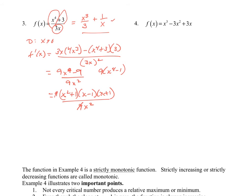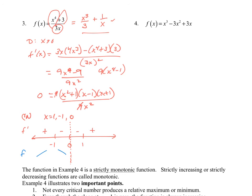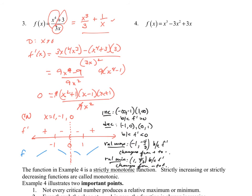After canceling the nine, critical numbers are at x equals 1, x equals negative 1, and x equals 0 (undefined). Setting up the number line with a vertical asymptote at x equals zero: plugging in negative 2 gives positive, then negative, then negative, then positive. So f is increasing, decreasing, decreasing, increasing. Go ahead and summarize this one yourself, then check your answer against the posted solution.